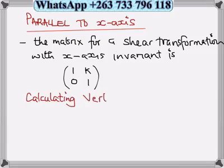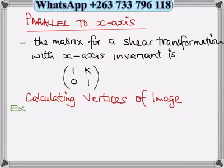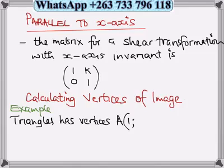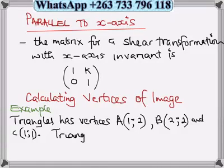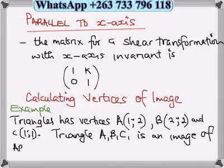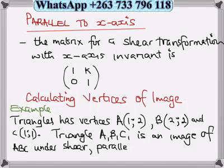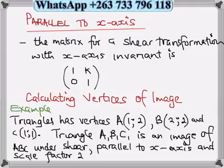When calculating the vertices of the image using this matrix, let's look at this example. Triangle ABC has vertices A(1,2), B(2,2), and C(1,1). Triangle A1B1C1 is an image of triangle ABC under shear transformation parallel to the x-axis with scale vector 2. This is our k, the scale vector is our k.